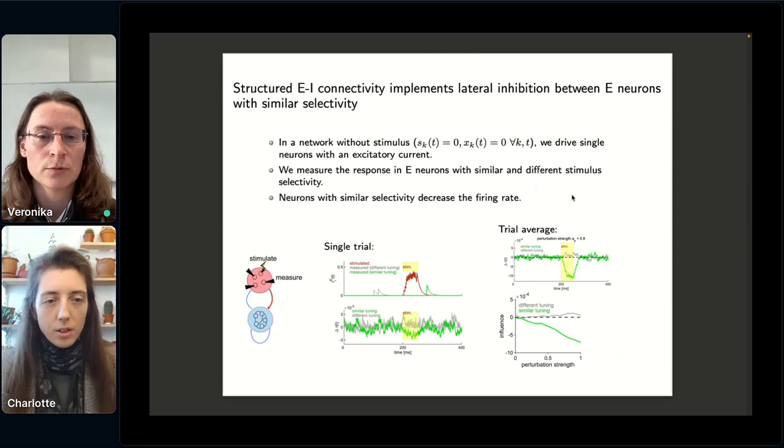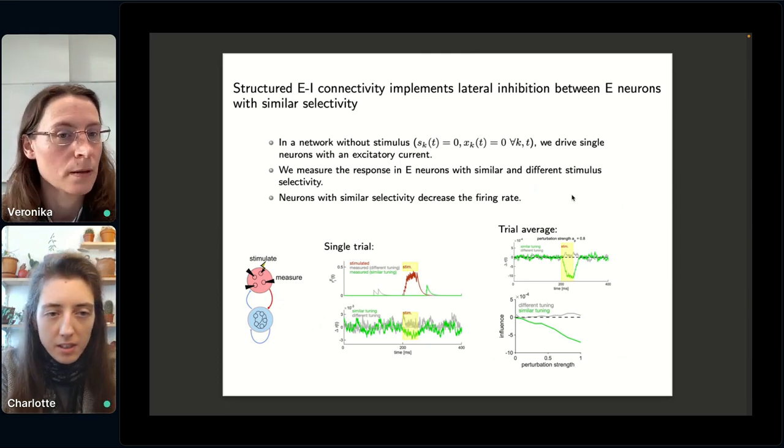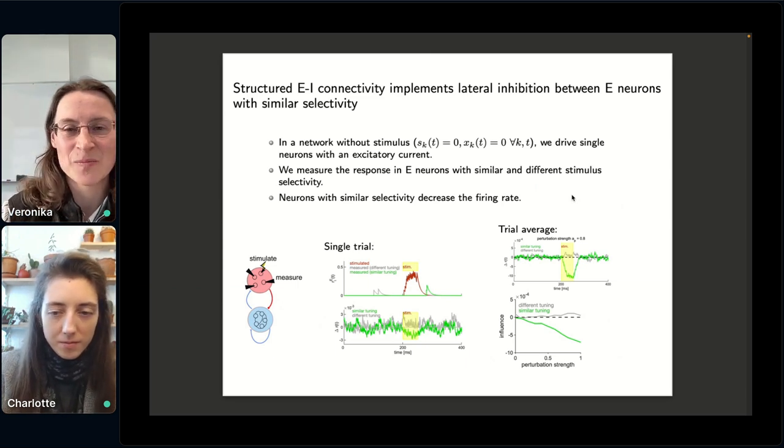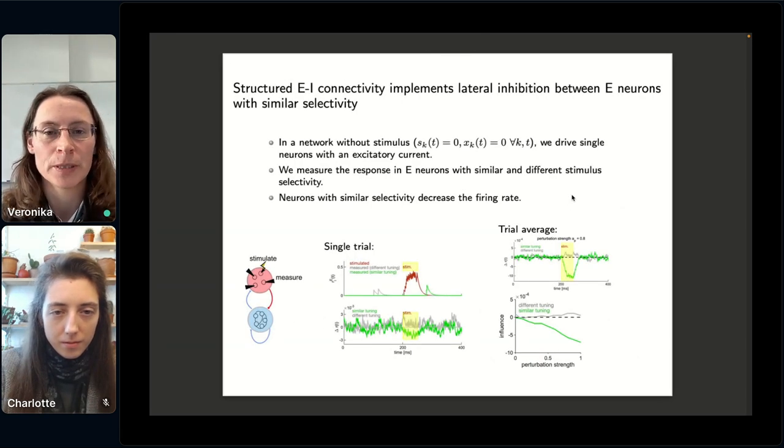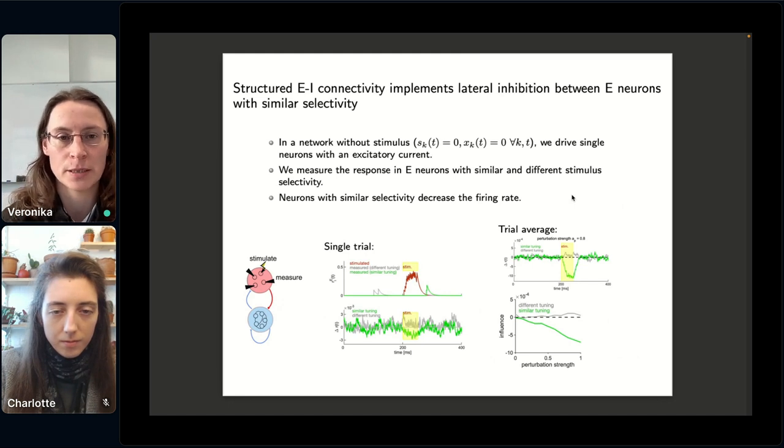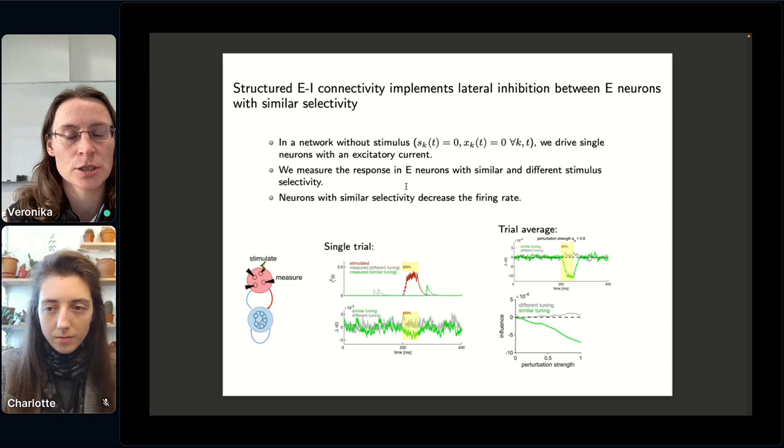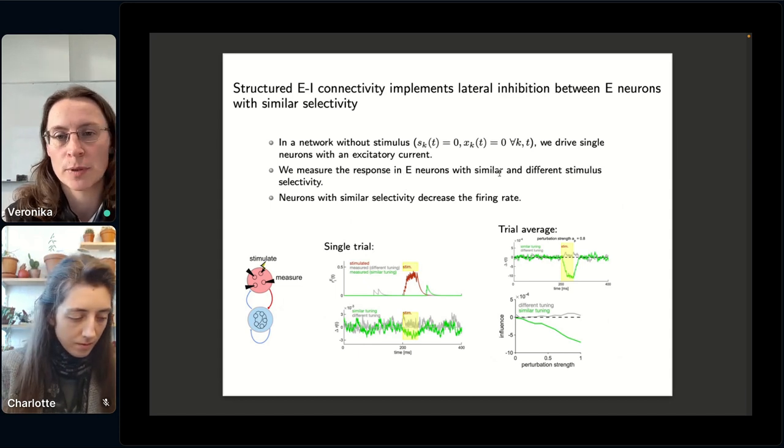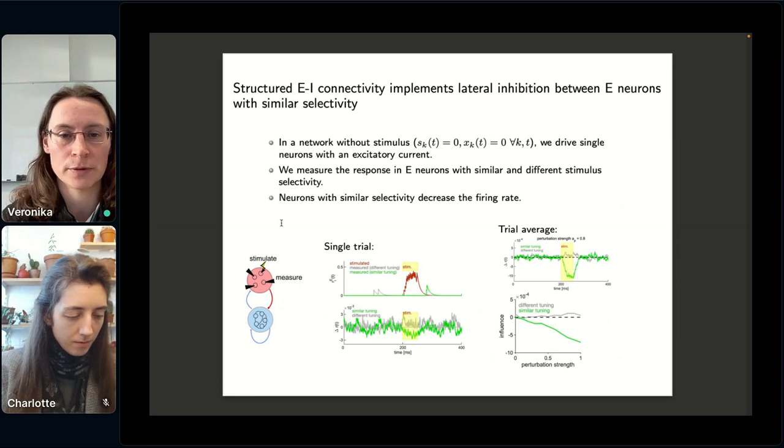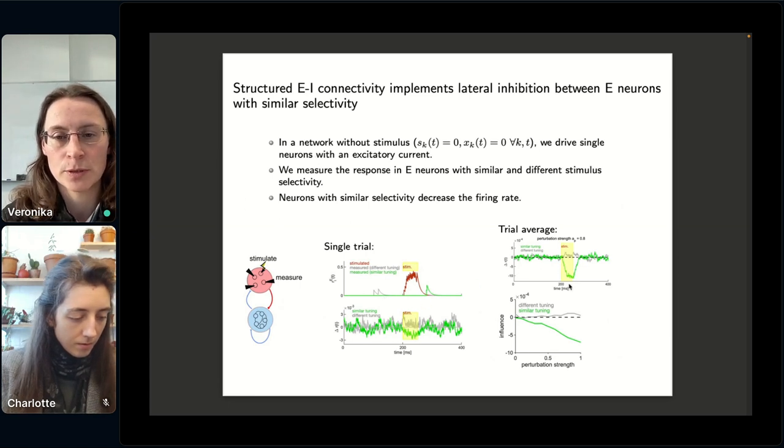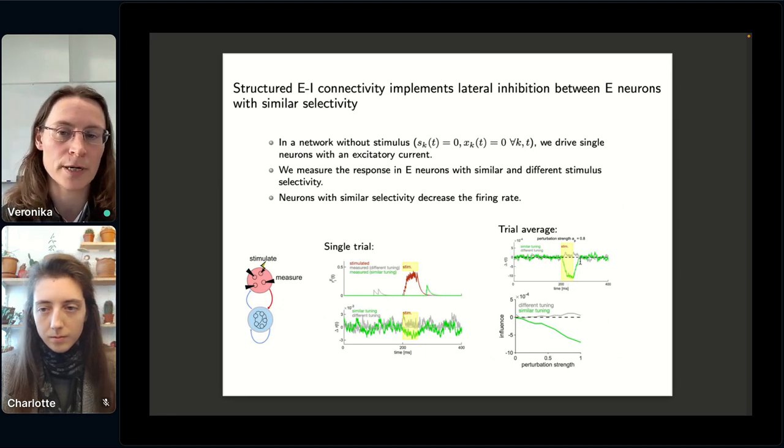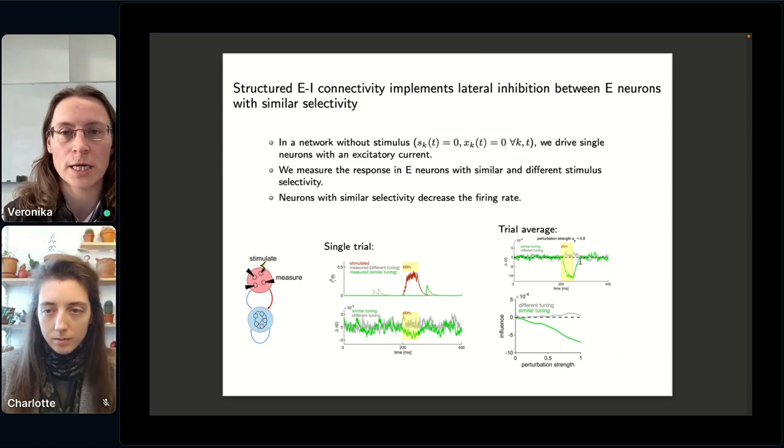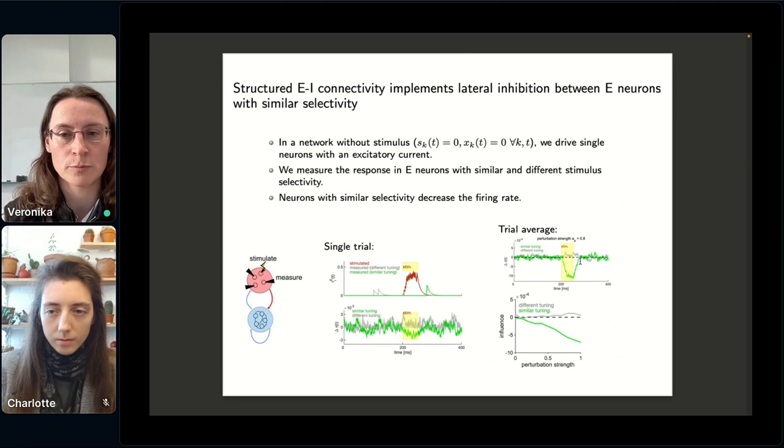So next we tested this network. There's about 30 seconds left, so it's necessary to wrap up. Okay, so let me just do it very quickly. So here I tested the network without a stimulus where I have driven a single neuron with an excitatory current and I measured the response of other excitatory neurons, distinguishing similar and different stimulus selectivity. And what we see is that neurons with different selectivity don't react much, but neurons with similar selectivity show a strong negative deviation from their baseline firing rate, which is a measure of basically lateral inhibition for these neurons with similar selectivity.